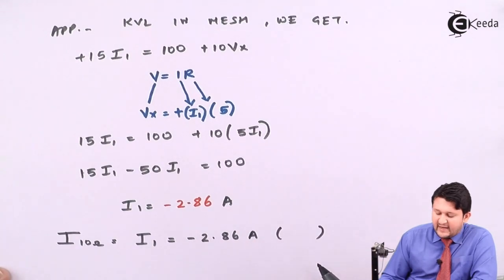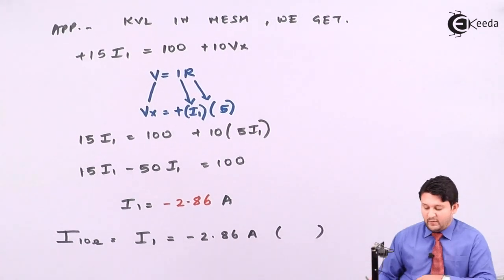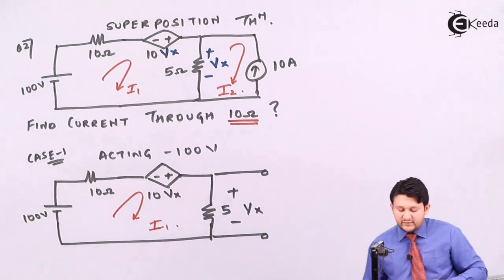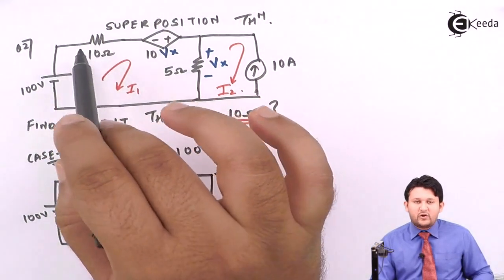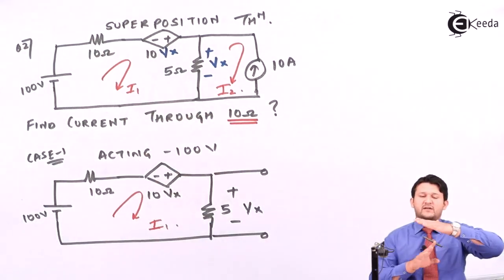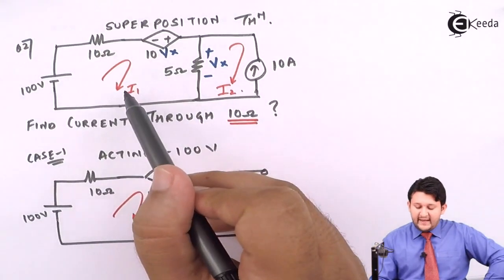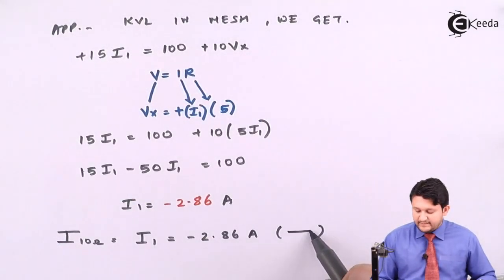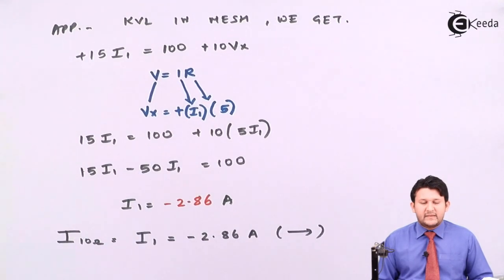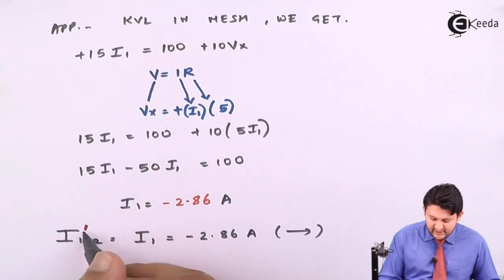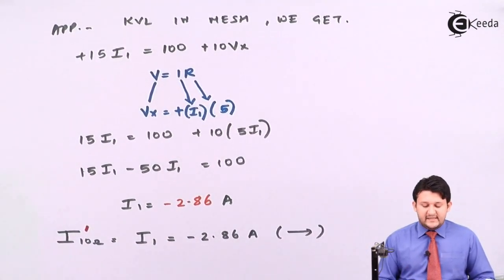Direction is compulsory in the Superposition Theorem. The 10Ω is placed horizontally, so the options are left or right. I1 flows in the right direction, so the direction is right. Denoting this as the Case 1 result with a single dash: I'(10Ω) = −2.86A, direction right.